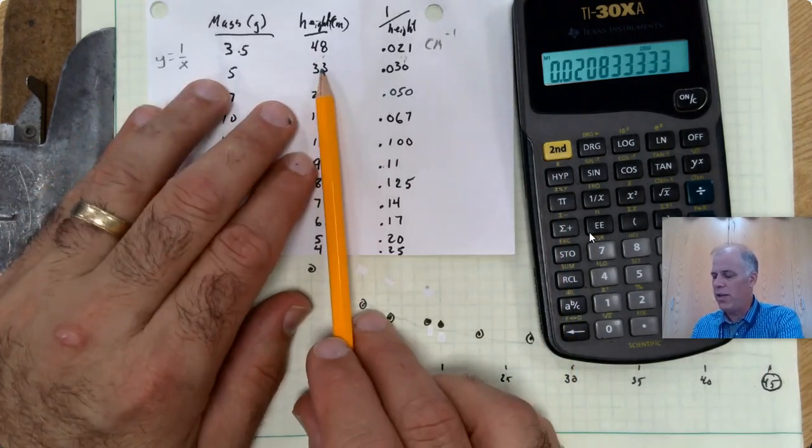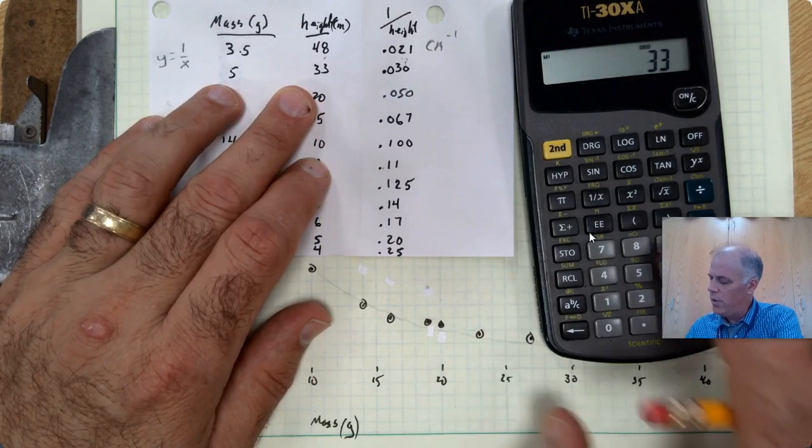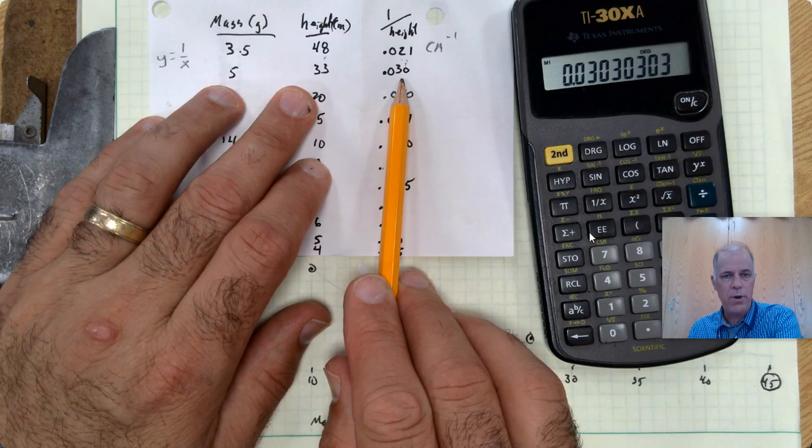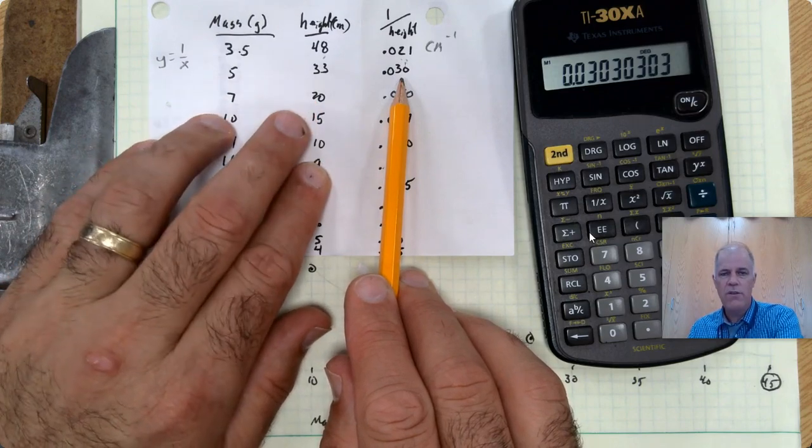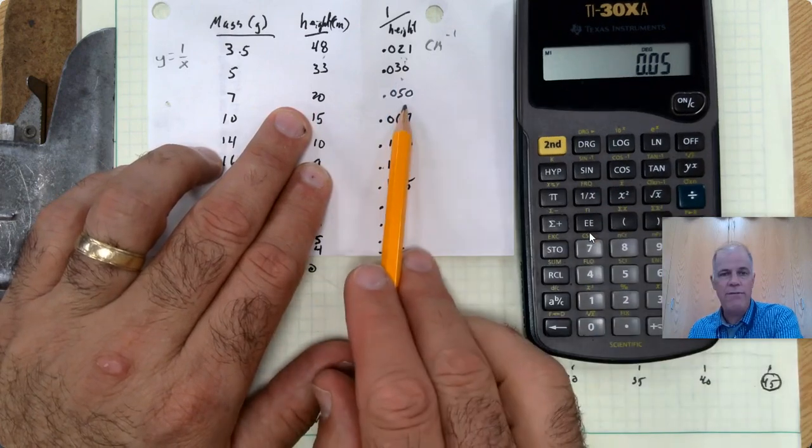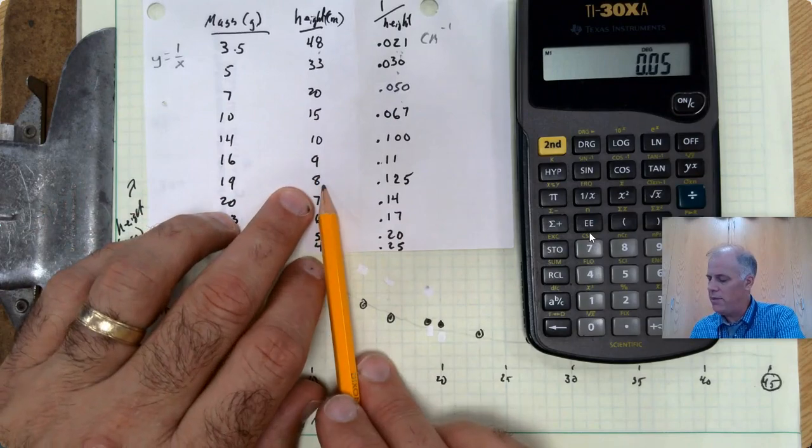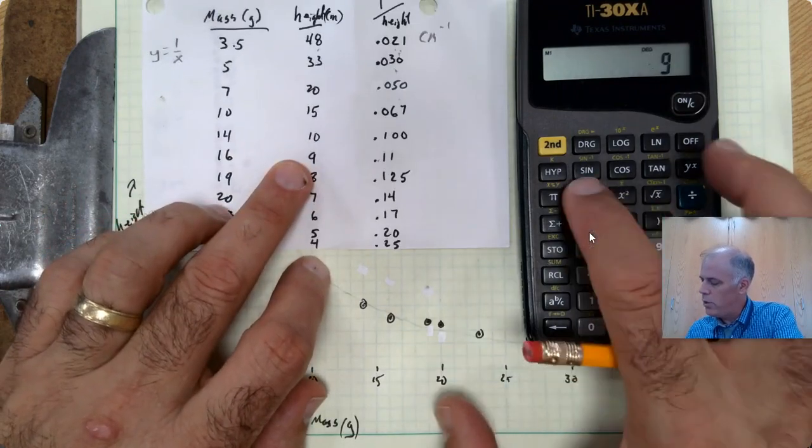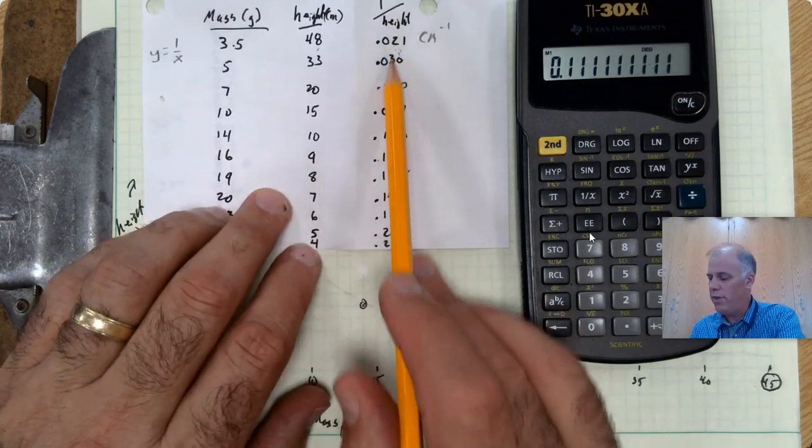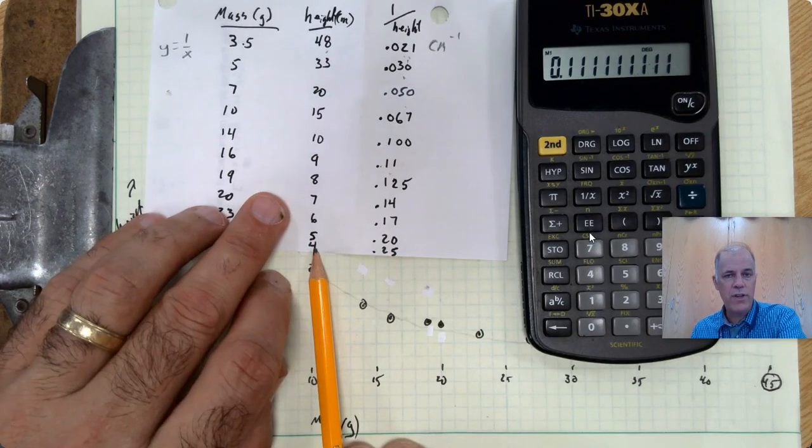Now, you do this for every single one of the heights that we have. So for 33 centimeters, we do 1 over x, we get 0.0303. That's the number that we get when we take the inverse. For 20 centimeters, we get 0.050. Coming on down to 9 centimeters, 1 over x is 0.11. And we've done this for all of the numbers, for all of the heights, for all of our samples.